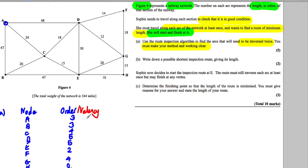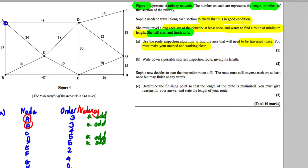The nodes we really care about are the odd-order ones. A is odd, B is odd, D is odd, and E is odd. We need to make all these odd nodes even to create an Eulerian graph from which we can start and finish at A. So our odd nodes are A, B, D, and E.